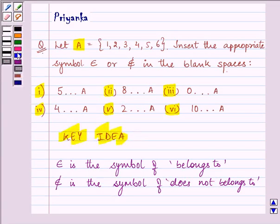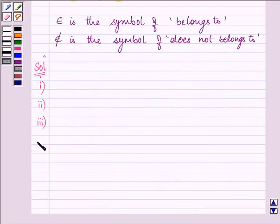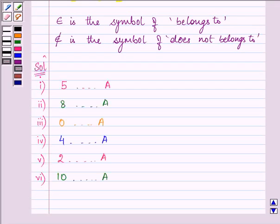So let us write down all six parts of the question together and then simultaneously we will think of each and everything. Now let us think of the first given part: 5 blank A.